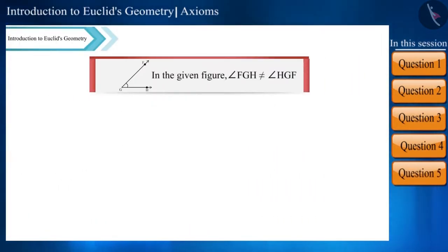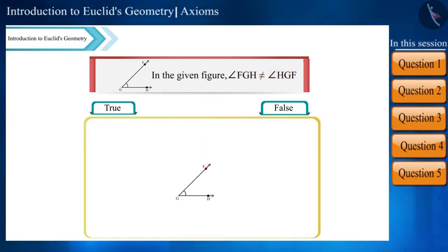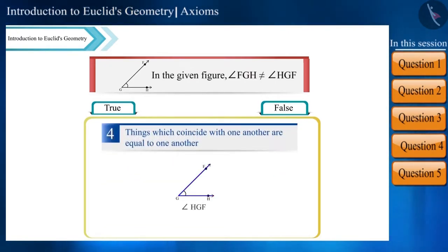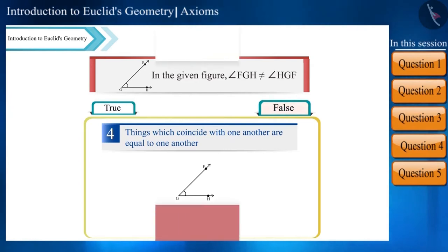Is the given statement true or false? Angle FGH is not equal to angle HGF. If we look at the figure carefully, both these names represent the same angle. According to Euclid's fourth axiom, things which coincide with one another are equal to one another. Therefore, these two angles will be equal, and so the statement is false.